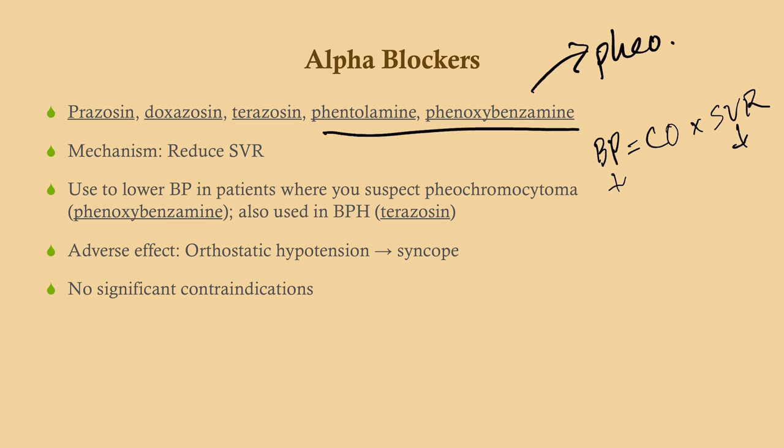Alpha blockers also have a use in BPH — men who have difficulty urinating, perhaps in their 50s to 60s with an enlarged prostate, can benefit from one of these drugs. The adverse effect here is orthostatic hypotension, because reducing vascular resistance can lead to syncope. Prazosin also has a really nice clinical use in managing nightmares in patients with a history of PTSD — completely unrelated to hypertension. There are really no significant contraindications for alpha blockers; just use your clinical judgment.